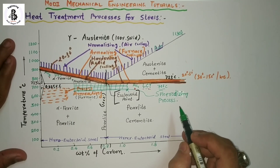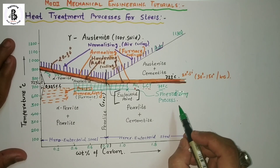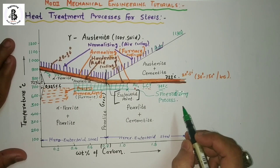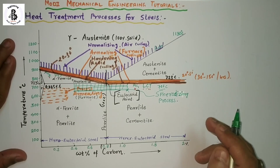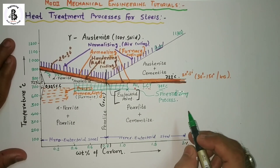These are all the details regarding the spheroidizing process, which is used for making a soft and ductile phase of the steels. I hope you understand the spheroidizing process.